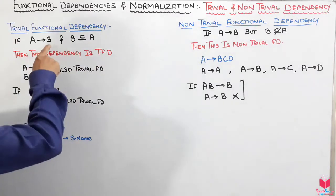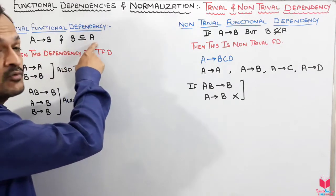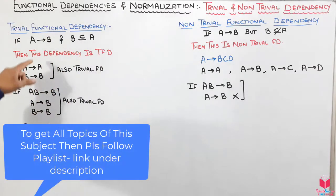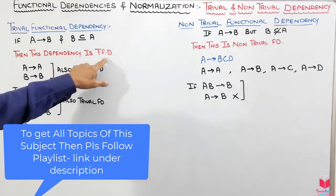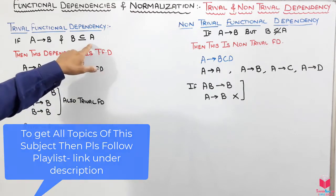If B is functionally dependent on A and B is a subset of A, then we will say that this dependency is a trivial functional dependency. What does that mean exactly?